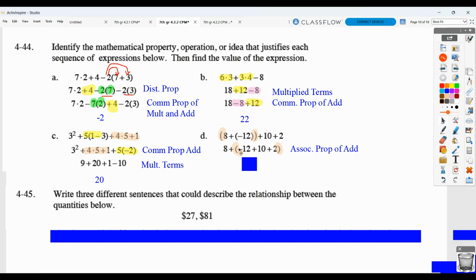Again, you might say, well, there's some subtraction, but subtraction is adding a negative. So, negative twelve plus ten plus two would basically be zero. Eight plus zero would be eight.